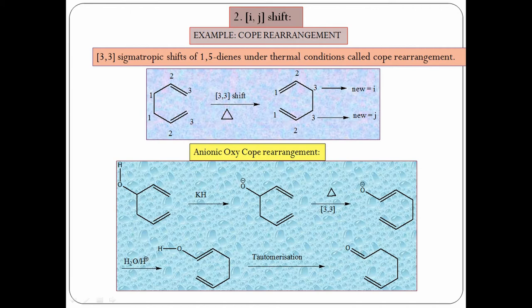For i,j shifts, the first example is the Cope rearrangement. In Cope rearrangement, a sigma bond forms between C3 and C3', and a double bond forms between C1 and C2, and C1' and C2'. The shortcut to remember: sigma bond forms at 3,3 and double bond forms at 1,2 and 1,2. Since position one changes to position three, we call this a 3,3-sigmatropic shift — an i,j shift.